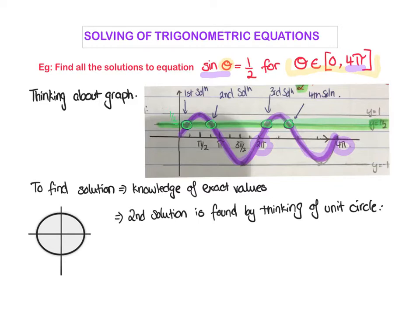There are four times that sine equals a half between zero and four pi. We're going to find the first solution from our exact values knowledge. Starting at zero and heading around, what angle do we know equals a half? From our exact values, we know that sine(π/6), or sine 30, equals a half.